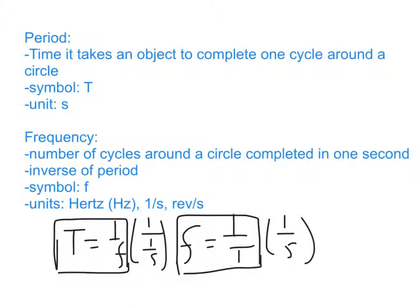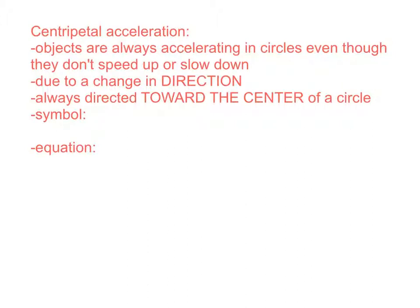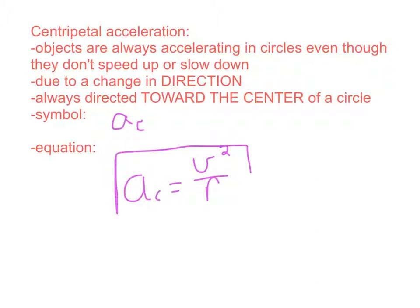We won't be dealing with frequency too much until we get to waves, but in case you see it, this is what it refers to. Now we have centripetal acceleration. Because objects are always accelerating in circles, they have centripetal acceleration. They're not speeding up or slowing down, but the change in direction causes the acceleration. It's always directed towards the center of a circle. The symbol is Ac, and the equation is Ac = v² / r — it depends only on speed and radius.